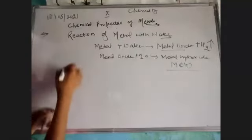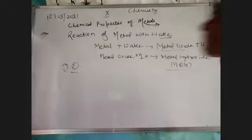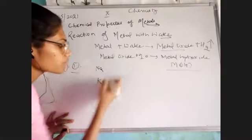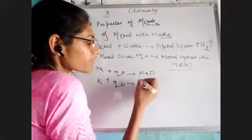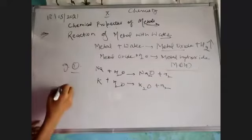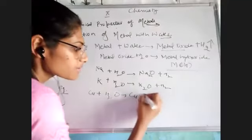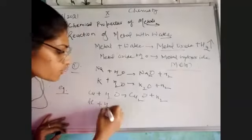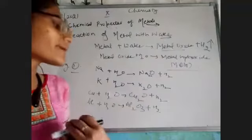Let's start with examples. Whenever sodium and potassium react with water, they form an oxide and hydrogen gas is released. Similarly, copper with water makes cuprous oxide plus hydrogen gas. Aluminium plus water makes aluminium oxide with hydrogen gas. This is almost the same as the previous topic of metal reacting with oxygen — the only difference is that when reacting with water, hydrogen gas is also released.